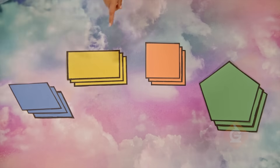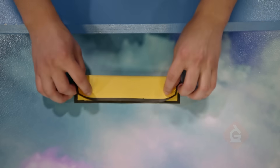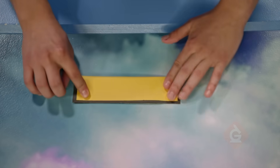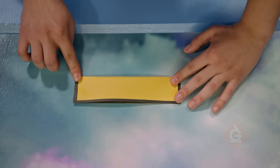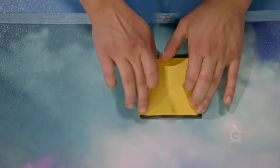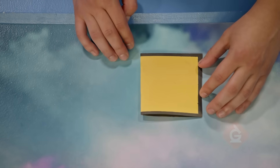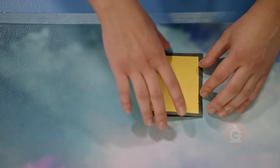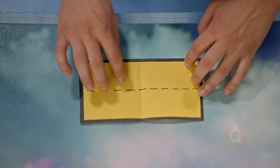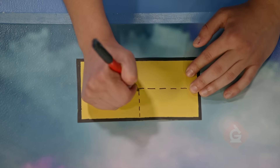Let's look for symmetry in some other shapes. If we can fold it in half and both sides match, then it has symmetry. Let's see what happens if we fold it the other way. Each side of this fold is matching too. So this rectangle has two lines of symmetry.